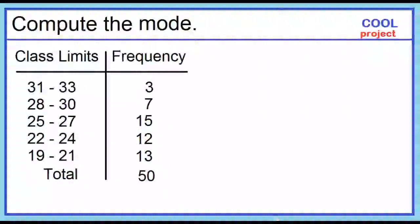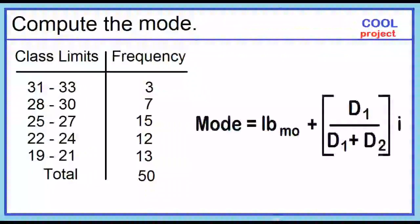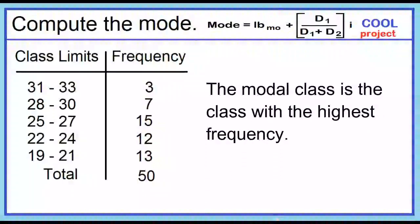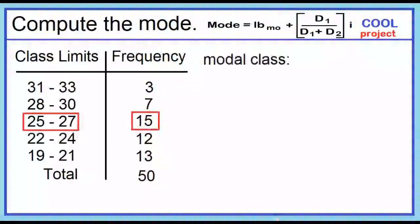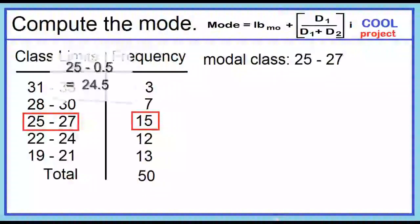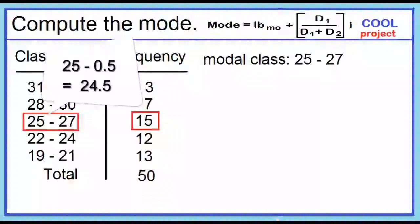Let's compute the mode. The mode equals the lower boundary of the modal class plus the quantity D₁ over (D₁ plus D₂) times the class width. The modal class is the class with the highest frequency. The highest frequency is 15, and the modal class is 25 to 27. The lower limit is 25, so the lower boundary is 25 minus 0.5, which equals 24.5.